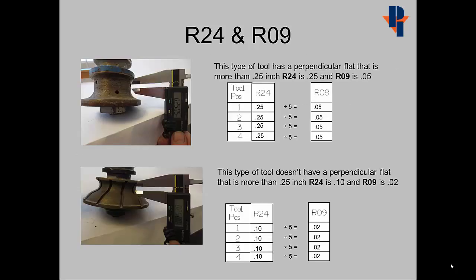The top type of a tool has a perpendicular flat that is more than 0.25 of an inch. The value for R24 would be 0.25 and the value of R9 would be 0.05. The bottom tool doesn't have a perpendicular flat that is more than a quarter inch. R24 would then be 0.10 and R9 would be 0.02.